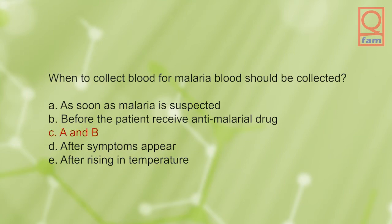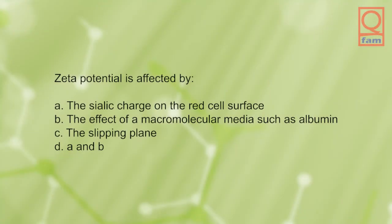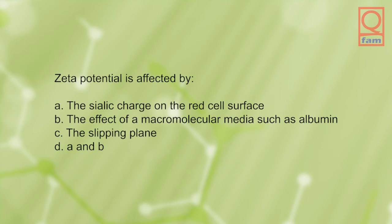Zeta potential is affected by: A) the sialic charge on the red cell surface, B) the effect of a macromolecular media such as albumin, C) the slipping plane, D) A and B. The answer is D, A and B.